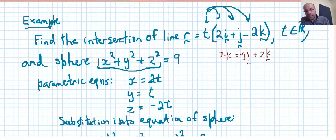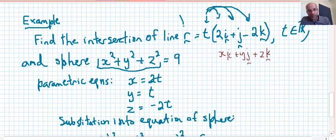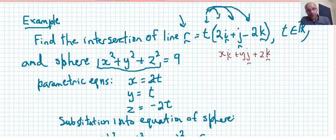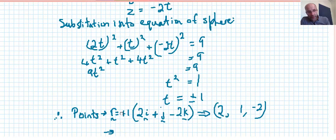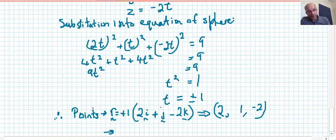We can go back to our line, because the line, the point that once we substitute those values into the equation for the line, we'll get that point. For the first point, I'm subbing in, and you can see there that I've used the positive first there for t, and that means we have a position vector 2i plus j minus 2k, which gives a point. If that's the position vector, the point where it touches the sphere will be at the end of that position vector, because it's got to satisfy the equation 2, 1, negative 2.